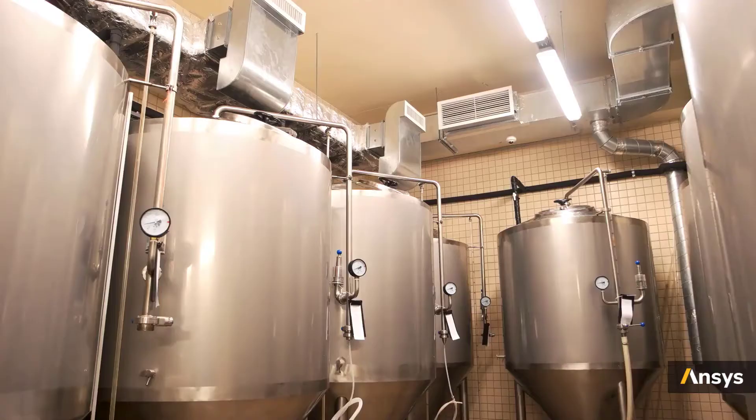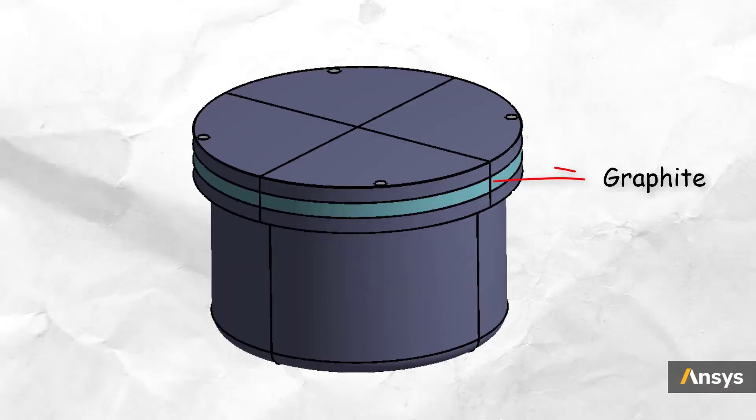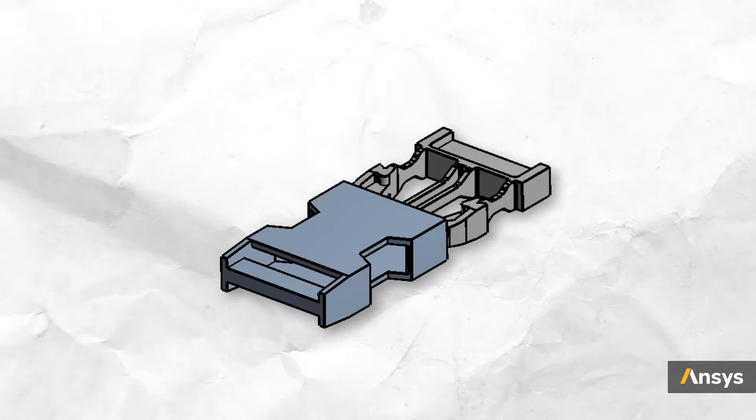In the third example, we move on to a closed vessel that has a graphite gasket sandwiched between two steel plates. Here we'll see how contact nonlinearity is responsible for making a model nonlinear. And in the fourth and final example, we'll look at a snap-fit buckle, which has all three nonlinearities and an additional case of loss of contact.